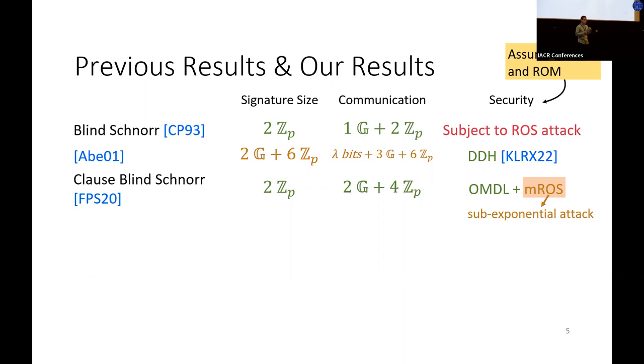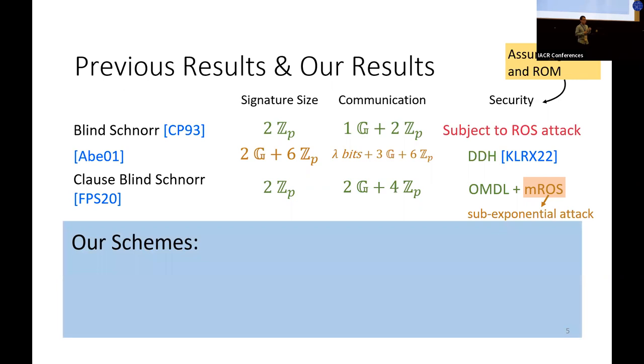Therefore, the major contribution of this paper is we propose two schemes that are both efficient and have exponential security. So our first scheme has signature size of just 3 scalars, and communication complexity is two group elements plus 3 scalars. And we prove its security in the generic group model.